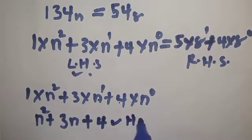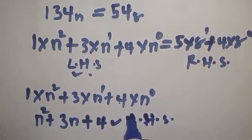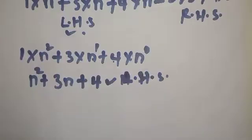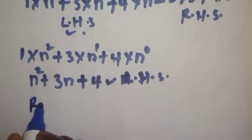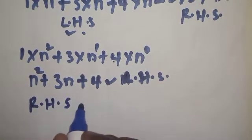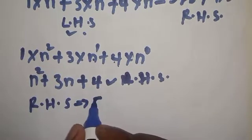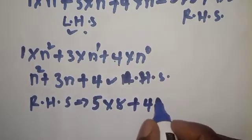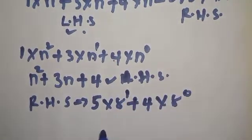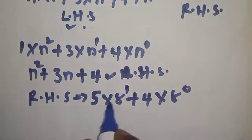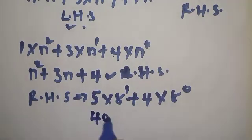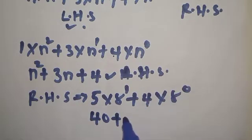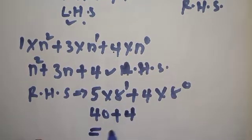This is our left-hand side. Now let's consider our equation on the right-hand side. We have 54 base 8. This implies we have 5 times 8 plus 4 times 8. Here is 8 raised to power 0 and 8 raised to power 1. So 8 to the power 1 is 8; 8 times 5 is 40. And 8 raised to power 0 is 1, times 4 is 4. Then 40 plus 4 is 44.